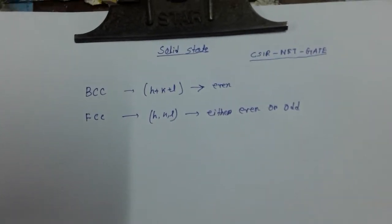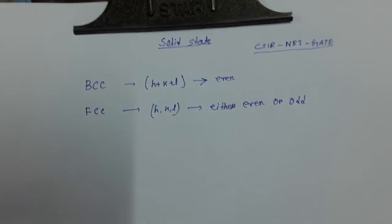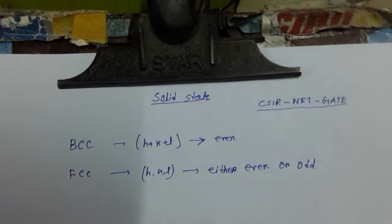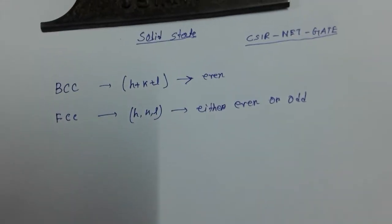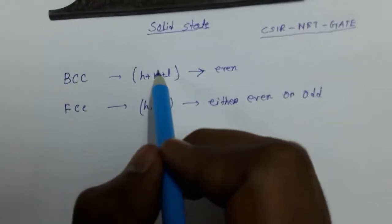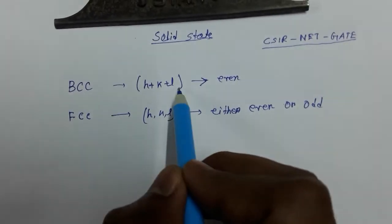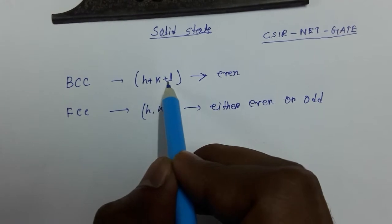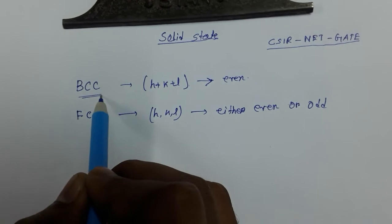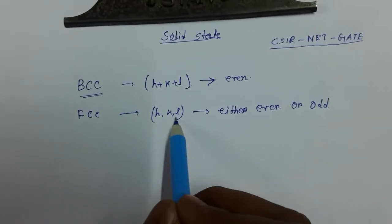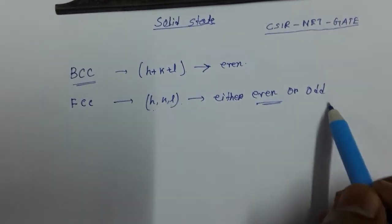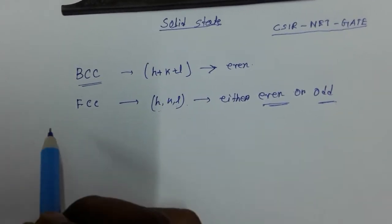Now I will discuss an important part of the solid state chapter: how we know which crystal will be FCC and which will be BCC structure from Miller indices. If the sum of h plus k plus l is even, then it will be BCC structure. But if hkl are either all even or all odd, then it will be FCC structure.